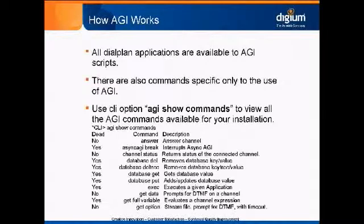All the dial plan applications are available to AGI scripts, and there are also commands specific only to AGI. I'm not going to list all of them because that would be really boring. But if you're curious, for whatever version of Asterisk you're running, in the CLI you can do 'AGI show commands' and it will list them all. There's also an 'AGI show command' option where you can look at documentation for a specific command.